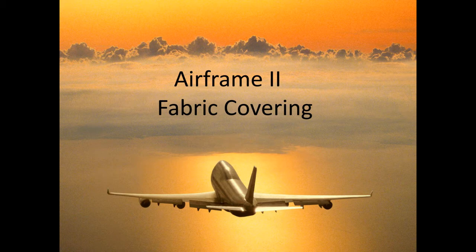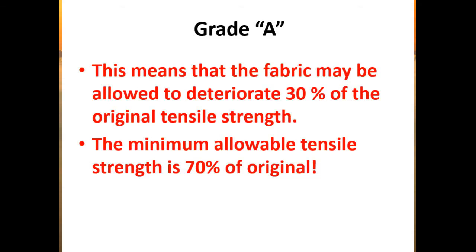For Grade A, the minimum deteriorated tensile strength is 56 pounds per square inch. If you do the math, 70 percent of the original 80 pounds per inch is 56 pounds per inch for Grade A fabric.